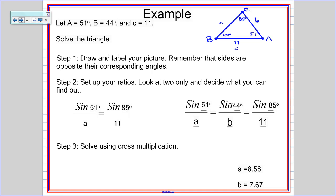When you solve this one using cross multiplication, you get A equals 8.58 and B equals 7.67. That should be enough on the basic law of sines questions. We'll be back for law of cosines and law of sines ambiguous case.